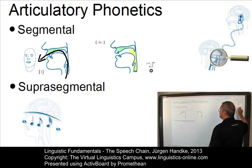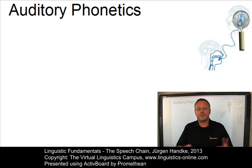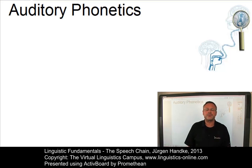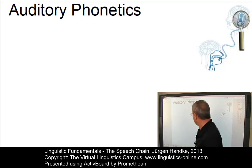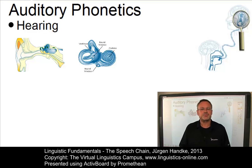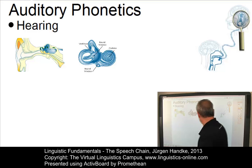Let us now look at the second branch: auditory phonetics. Auditory phonetics investigates the processes underlying human speech perception. The starting point for any auditory analysis of speech is the study of the human hearing system — that is, the anatomy and physiology of the ear and the brain. Since the hearing system cannot react to all features present in a sound wave, it is essential to determine what we perceive and how we perceive it. This enormously complex field is referred to as speech perception.